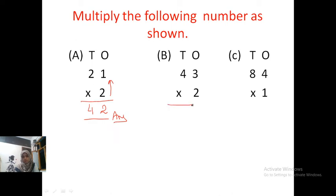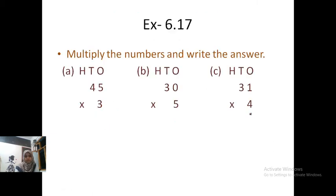Next. 43 x 2. 2 x 3 is 6. And 2 x 4 is 8. So our answer is 86. Next. C. 84 x 1. 1 x 4 is 4. 1 x 8 is 8. So our answer is 84.